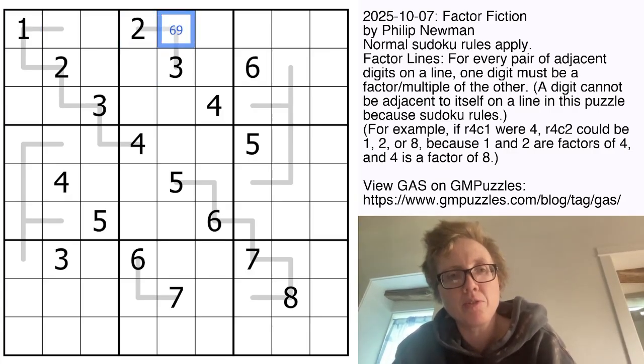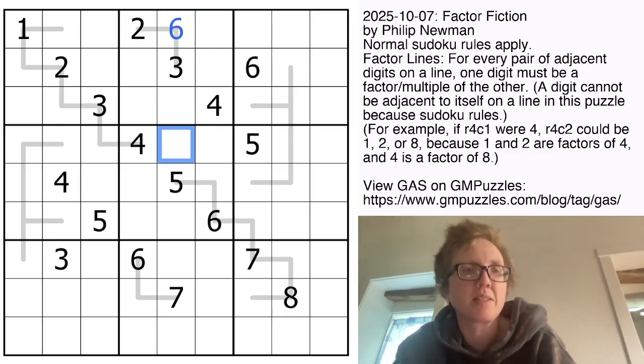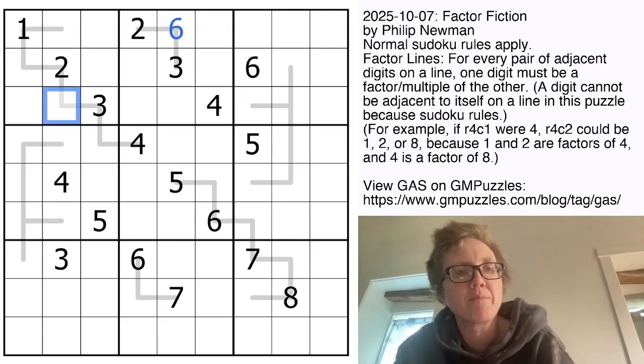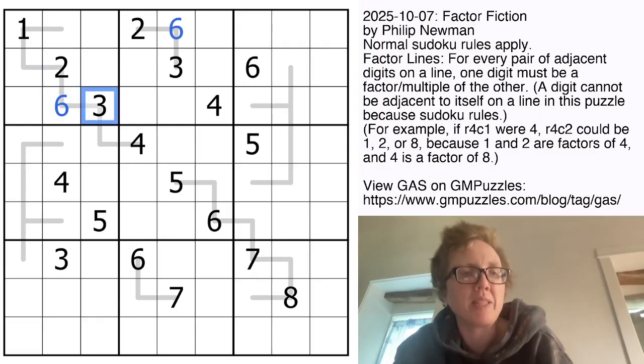And if you look at the 2, 2 is not a factor or multiple of 9, but it is a factor of 6, so that's going to be a 6. And in fact, that's also going to be true here, because there's already a 1 in the region, we can't use 1. And the digit between 2 and 3, therefore, can only be 6.